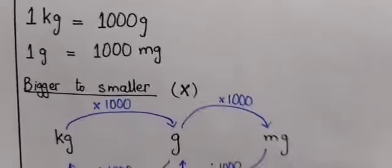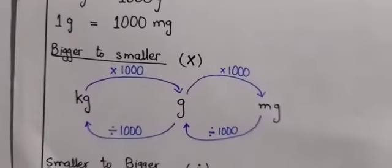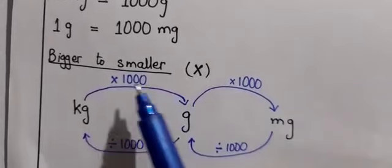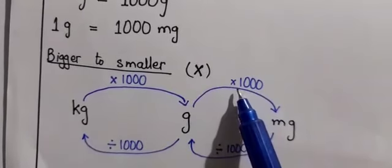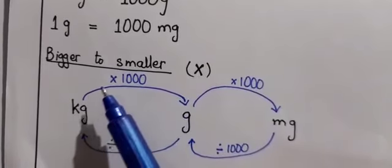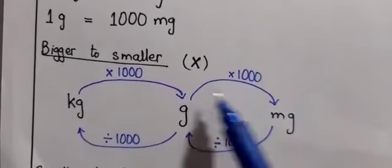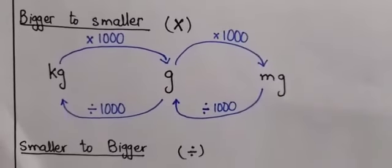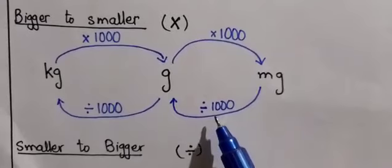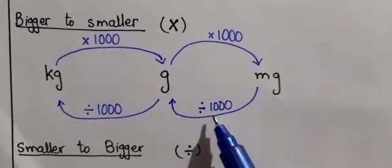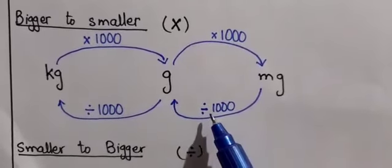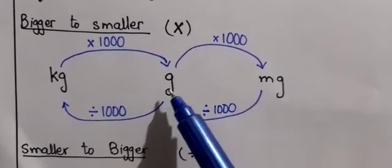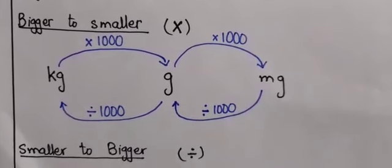Here is our chart that we have to remember. When moving from bigger to smaller value — kilogram to gram, or gram to milligram — we multiply the value by one thousand. When moving from smaller to bigger, we divide. To convert milligrams into grams, divide by one thousand. To convert grams into kilograms, divide by one thousand. Remember it.